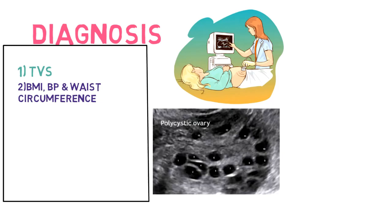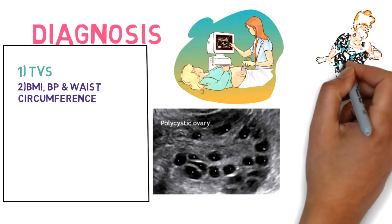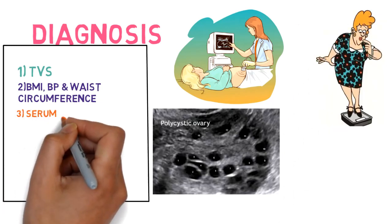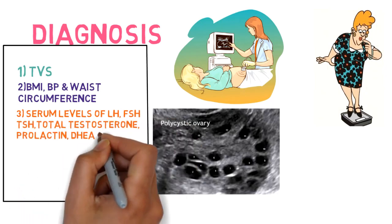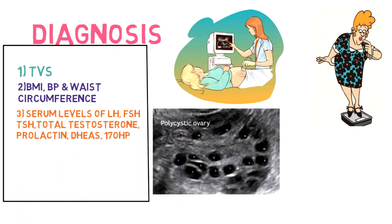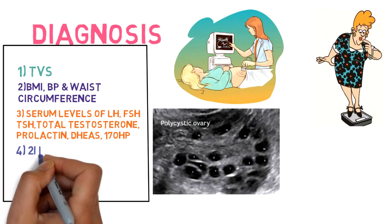BMI, BP, and waist circumference to check the weight. Serum levels of LH, FSH, total testosterone, TSH, prolactin, DHEA-S, and 17-OHP, from which to assess LH and FSH to check the secretion, prolactin, DHEA-S which acts on the ovaries causing more androgen release, and increased 17-OHP which causes congenital adrenal hyperplasia.